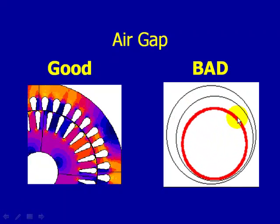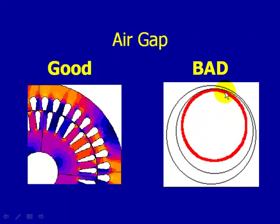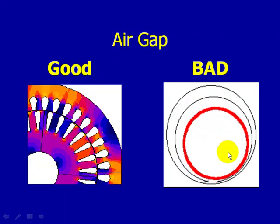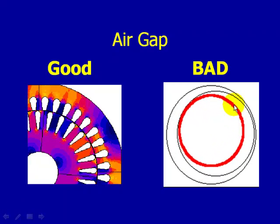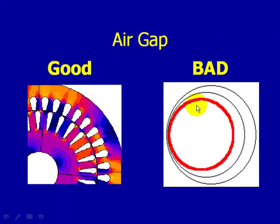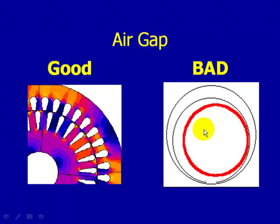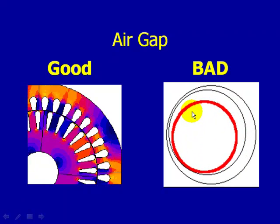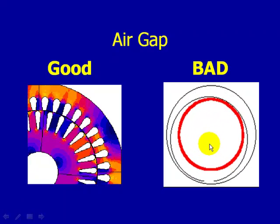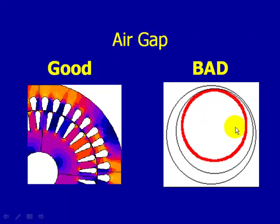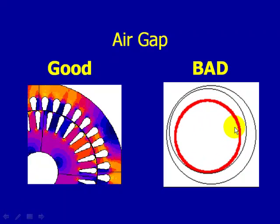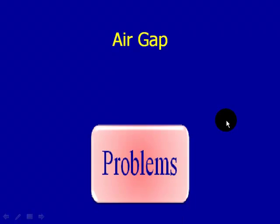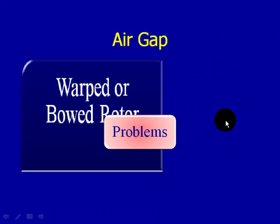If this rotor rubs against the stator, you could cause serious damage to not only the rotor, but to the stator, which would potentially result in a catastrophic failure requiring immediate repair or replacement of that motor.